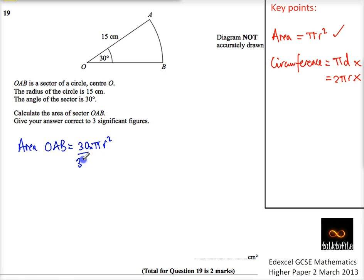The fraction I want is 30 over 360, because I want this section here, and that circle carries on all the way around there. So OAB is 30 over 360, which is actually 1 twelfth of the whole circle, times πr².